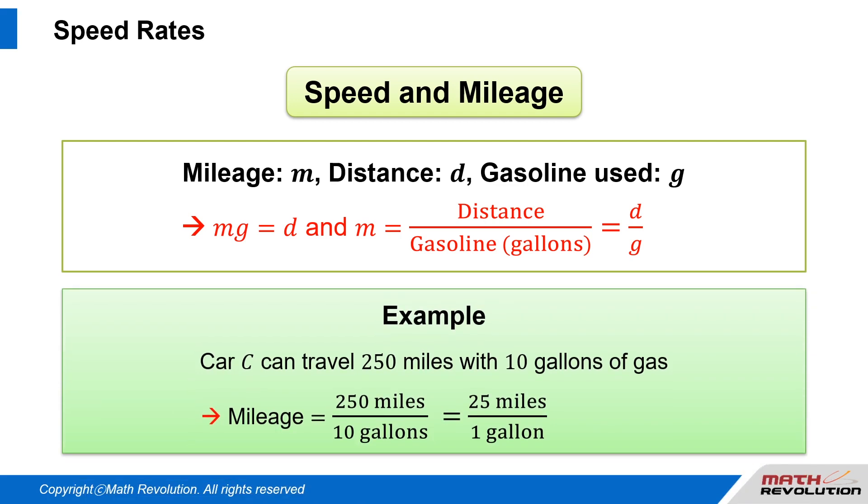For example, if car C can travel a distance of 250 miles with 10 gallons of gas, the mileage for car C will be 250 miles over 10 gallons, which equals 25 miles over 1 gallon, which equals 25 miles per gallon.